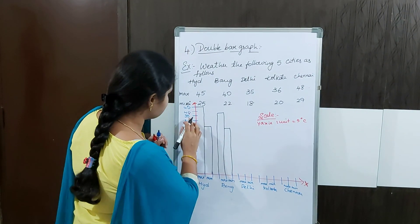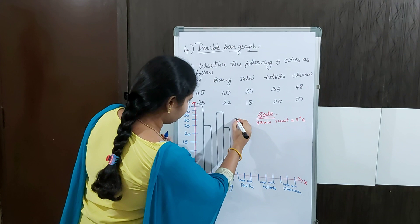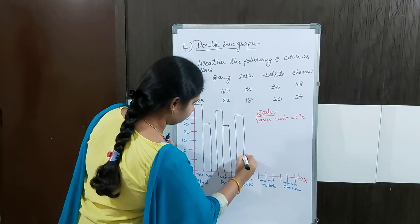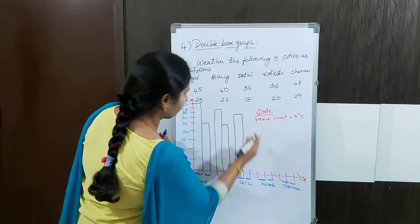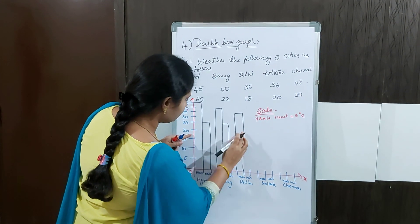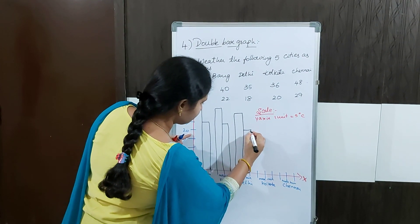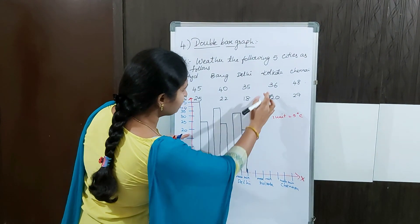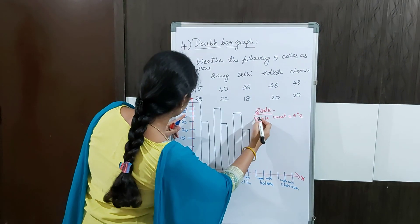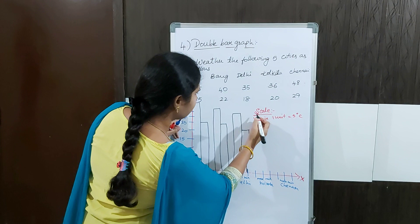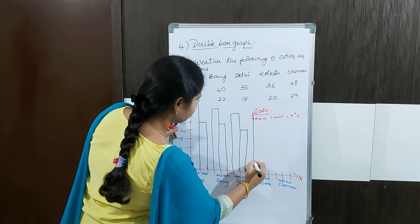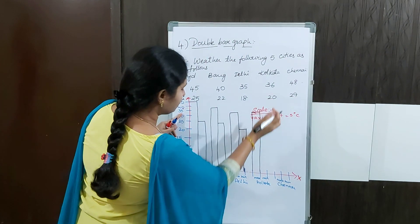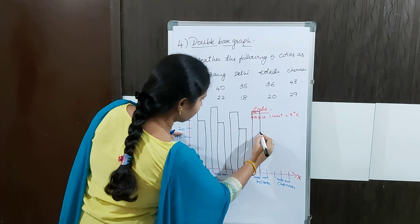For Delhi, the maximum temperature is 35. The minimum temperature is 18, so it should be less than 20. For Kolkata, the maximum is 36 — more than 35. The minimum is exactly 20.